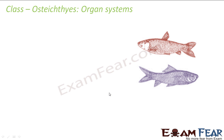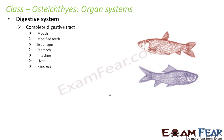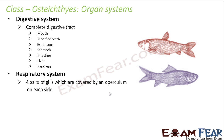Looking at the organ systems of Osteichthyes: the digestive system has a complete digestive tract with two openings — one for ingestion and one for egestion — including mouth, modified teeth, esophagus, stomach, intestine, liver, and pancreas. The respiratory system has four pairs of gills covered by an operculum on each side, which is a feature not present in Chondrichthyes.